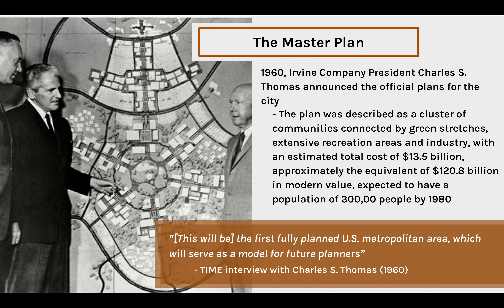A major aspect of Irvine was its master plan. In the 1960s, the Irvine Company locked in this urban development vision. Specifically in 1960, company president Charles S. Thomas announced a city plan described as a cluster of communities — now known as villages — connected by parks, recreation, and offices. Originally estimated to cost $13.5 billion, which in modern value is $120.8 billion. By 1980, it was expected to have 300,000 people, a figure it has almost reached.